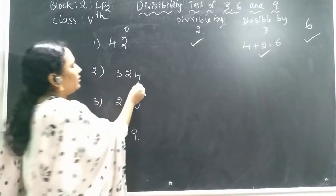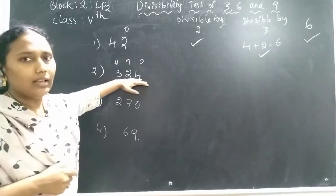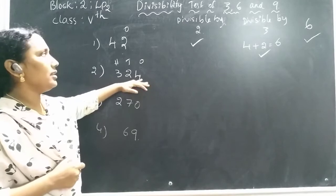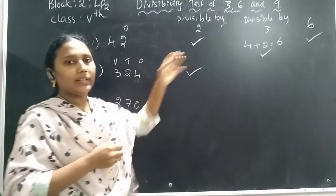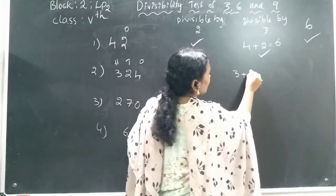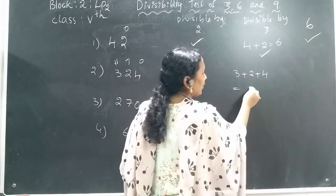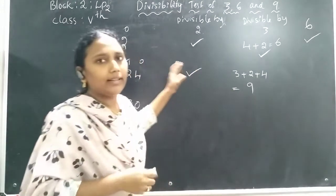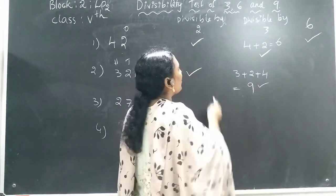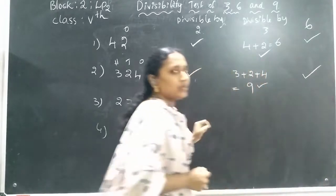Let's go to the next number. Looking at the ones, tens, and hundreds places — the digit at the ones place is 4, which is even. So this number is divisible by 2. For the divisibility test of 3, we add the digits: 3 plus 2 plus 4. That gives 3 plus 2 equals 5, and 5 plus 4 equals 9. Is 9 in the 3 times table? Yes — 3 times 3 is 9. So it is divisible by 3, and therefore also divisible by 6.